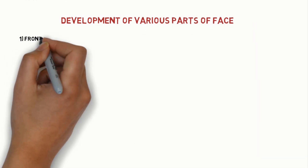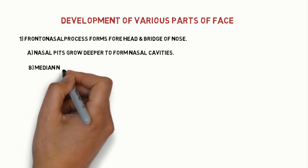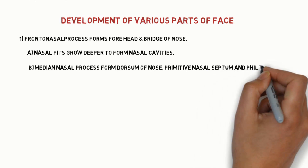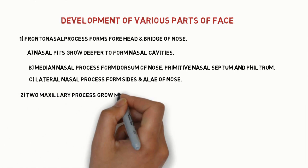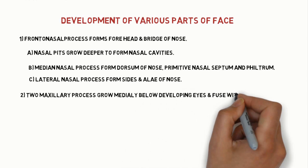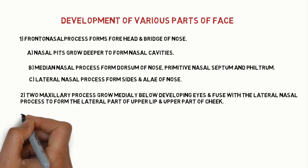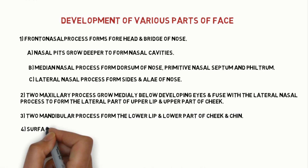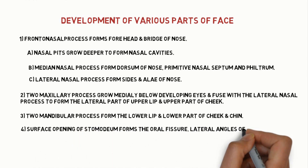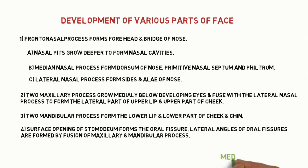Development of various parts of the face: the frontal nasal process forms the forehead and bridge of the nose. The nasal pits grow deeper to form the nasal cavities. The median nasal process forms the dorsum of the nose, primitive nasal septum, and philtrum. The lateral nasal process forms the sides and alae of the nose. Two maxillary processes grow medially below the developing eyes and fuse with the lateral nasal process to form the lower lip, lower part of cheek, and chin. The surface opening of the stomodeum forms the oral fissure, and the lateral angles of the oral fissure are formed by fusion of the maxillary and mandibular processes. This is how the face develops during the embryonic stage.